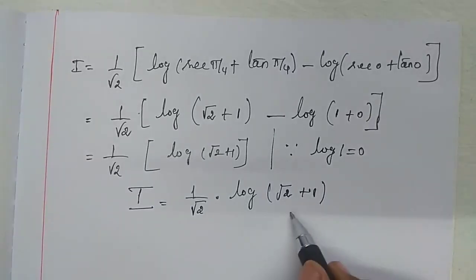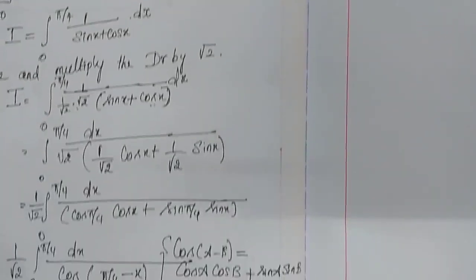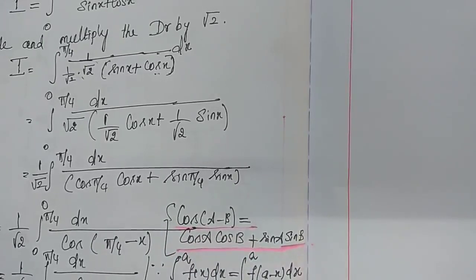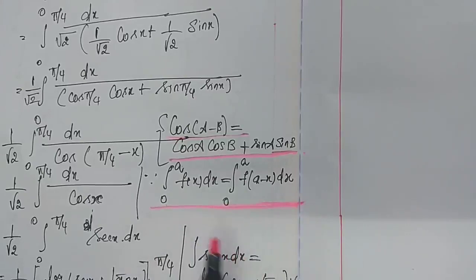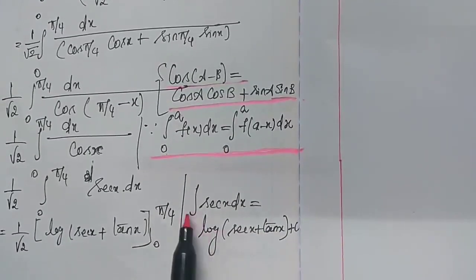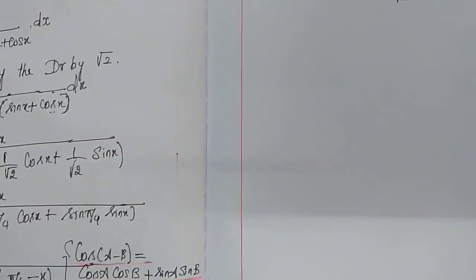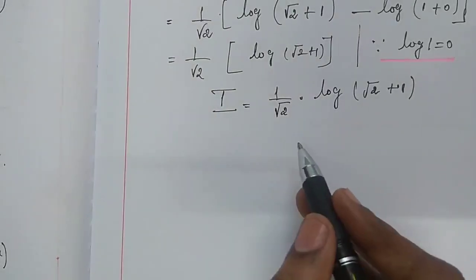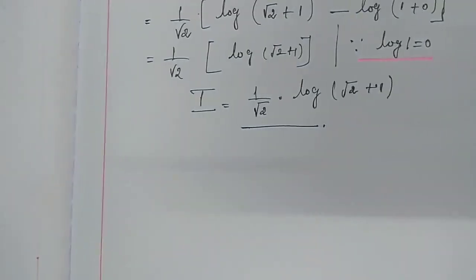This is the answer for Example 9.19. The applied formulas are: cos(a − b) = cos a cos b + sin a sin b; the property ∫₀^a f(x)dx = ∫₀^a f(a − x)dx; ∫sec x dx = log|sec x + tan x| + c; and log 1 = 0. Example 9.19 is over. We move to Example 9.20.